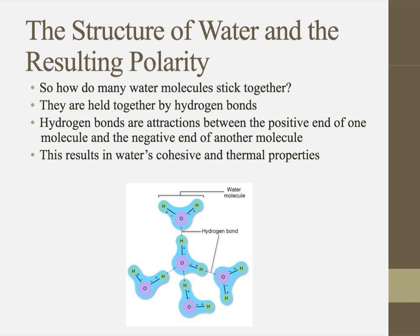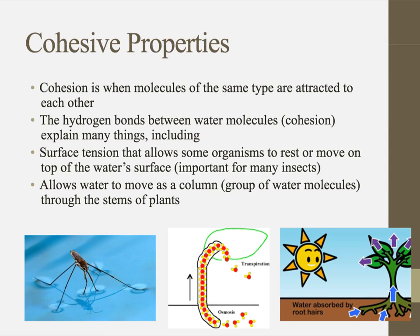This is what makes water very cohesive. It gets a lot of its thermal properties from hydrogen bonding, whereas water's actual polarity is very good for its solvent properties. Now let's talk a little bit more about water's particular properties. The first one is called cohesion.